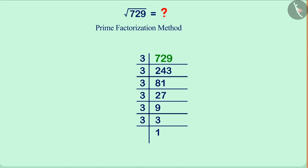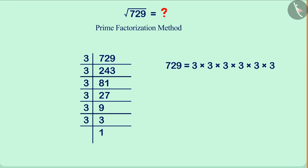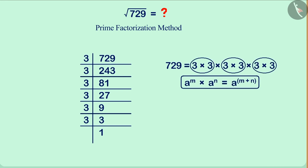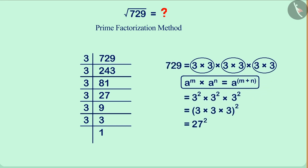We can write the number 729 as the product of its prime factors. Now, we will see how many prime numbers are in pairs in this factorization. There are three pairs of the number 3. By the laws of exponents, we can write this multiplication of factors and we get 729 as the square of 27. That is, we can say that the square root of 729 is 27.